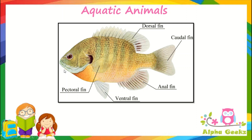Fish have fins, which are modified limbs used for locomotion. Based on their position, fins serve different purposes. The pectoral fin helps to balance. The dorsal fin is used for protection. The ventral and anal fins help with steering and balance. The caudal fin, also known as the tail fin, helps in changing direction.